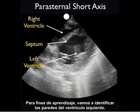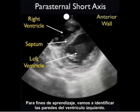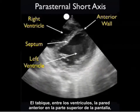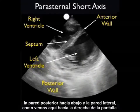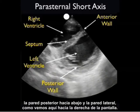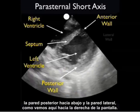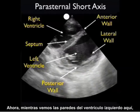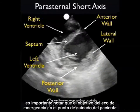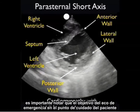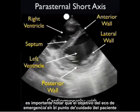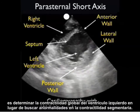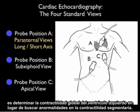For learning purposes, we'll identify the walls of the LV: the septum in between the ventricles, the anterior wall to the top of the screen, posterior wall to the back, and the lateral wall as shown here towards the right portion of the screen. While I show the walls of the left ventricle here, it's important to realize that the goal of emergency echo at the bedside is to determine overall left ventricular contractility rather than looking for segmental wall motion abnormalities.